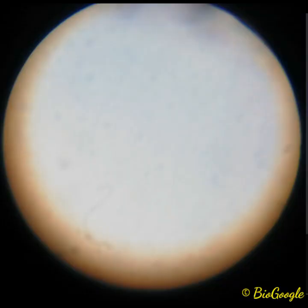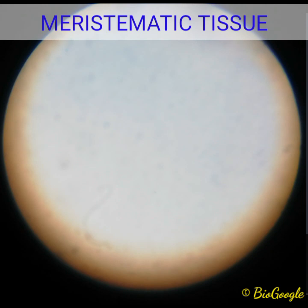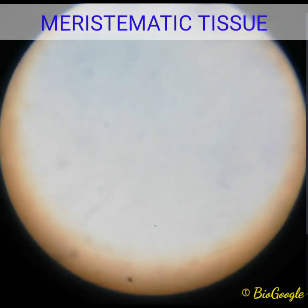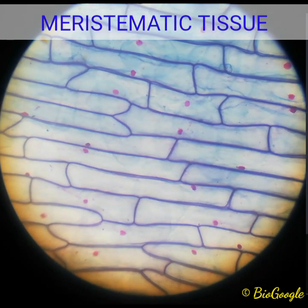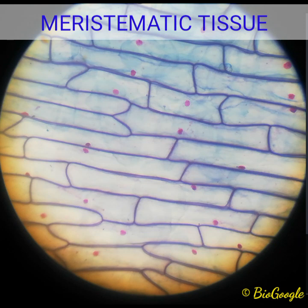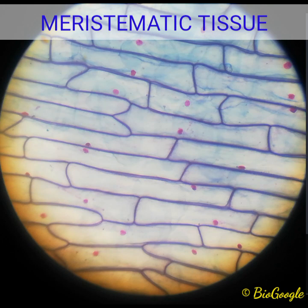We will go to the microscope slides. First, let us focus the meristematic tissue. Here we can clearly see the hexagonal or rectangular cells with one peripheral nucleus. The nucleus is pushed towards the periphery just because of the central vacuole. And in meristematic tissue, there are no intercellular spaces, so all the cells are compactly arranged. Students, see properly the structure of a meristematic tissue.